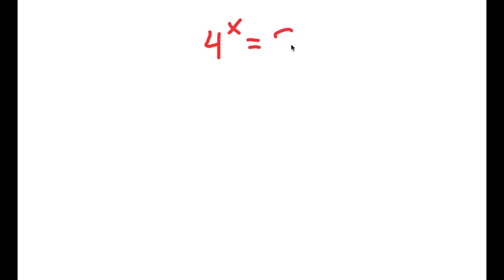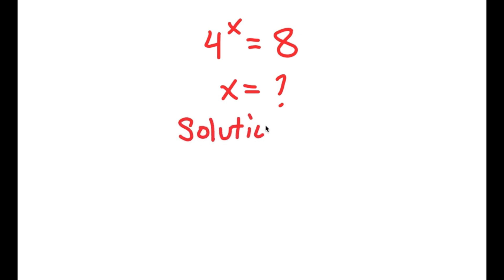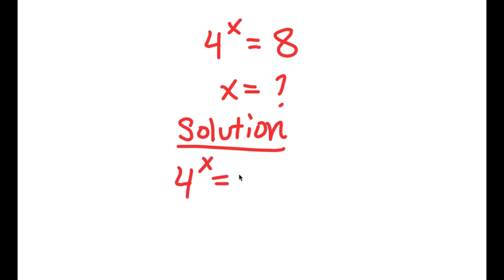In this problem, I have 4 to the power of x is equal to 8. I want to find the value of x. For my solution, I'll start by rewriting the problem: 4 to the power of x is equal to 8.